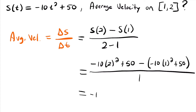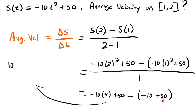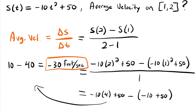Simplifying further: negative 40 plus 50 is 10, minus negative 10 plus 50 which is 40, gives us 10 minus 40 equals negative 30. So our average velocity is negative 30 feet per second over the interval from t equals 1 to t equals 2. The position function is in feet and time in seconds, so the units are feet per second. Remember to always include units for velocity.